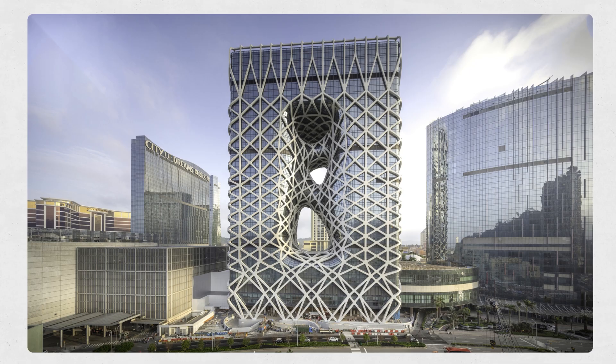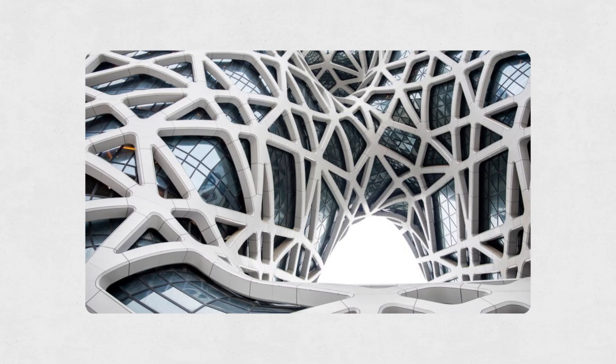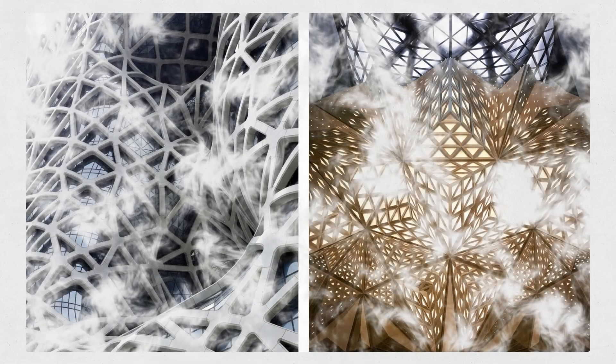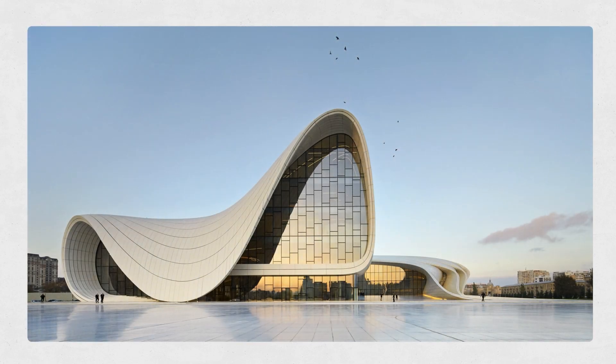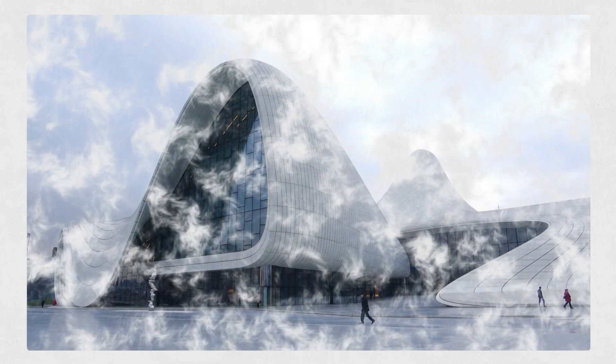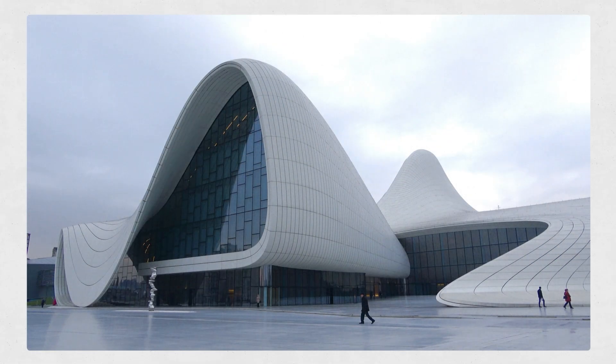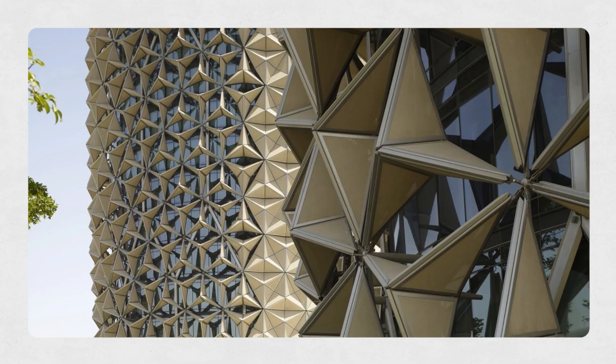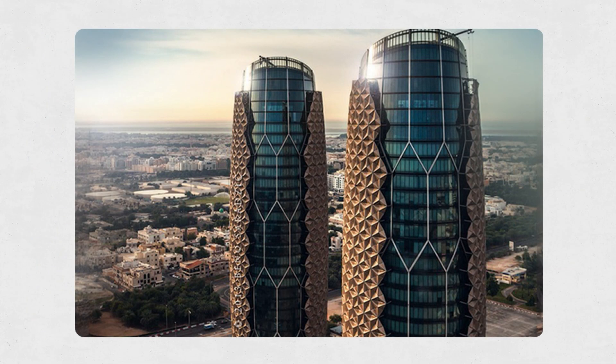Let's look at some seriously cool projects that use Grasshopper. First up, there's the Morpheus Hotel by Zaha Hadid Architects in Macau — the organic form and that super complex structural network were totally designed with parametric algorithms. Then we've got the Heydar Aliyev Center, also by Zaha Hadid in Baku — those continuous curves and organic roofs modeled with Grasshopper and parameters are just mind-blowing. And don't forget the Al-Bahar Towers in Abu Dhabi by Aedas, with their amazing moving and algorithmic shell system to control light and energy for the building — that's next level innovation.